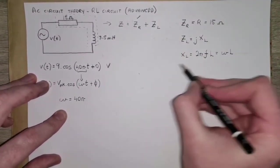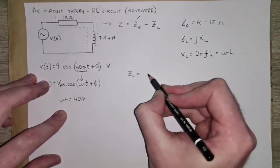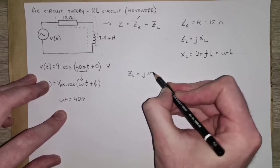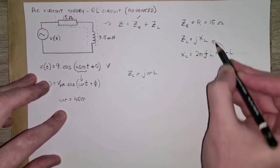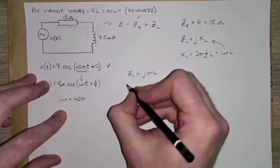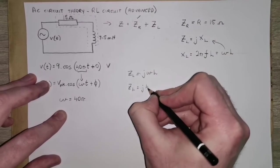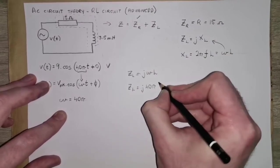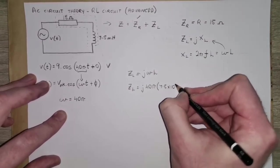Let's get the impedance of our inductor next. Zl is j times omega l. I'll just put that in there. That's j times 40 pi multiplied by 7.5 by 10 to the minus 3.